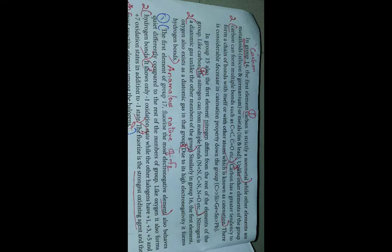Second point, nitrogen is a diatomic gas but remaining gas that is phosphorus, they are all not diatomic. So N2. So nitrogen alone is a diatomic gas. Then third point, due to high electronegativity. It is a high electronegative element nitrogen. So it can easily form the hydrogen bonds. So for nitrogen, three points is there.